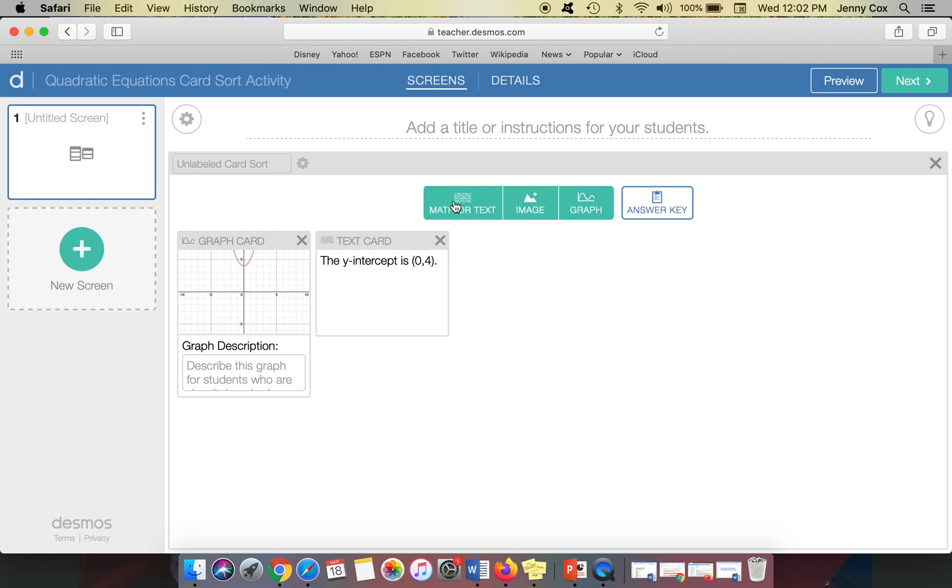So I would go to math and I could say something like the y-intercept is (0,4). And so I have that for my students and they could match those together in the activity. I can also enter other things. I could enter something like this graph has no real zeros.